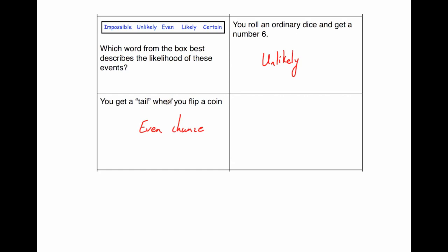Because there's two outcomes when you flip a coin. You've got heads and tails, and tails is one of them, so that's an even chance. Or 50-50, but write even chance, or evens. Okay, our next question.